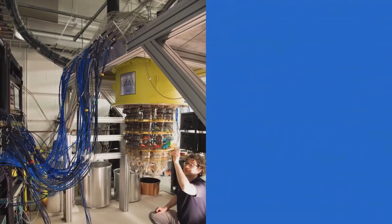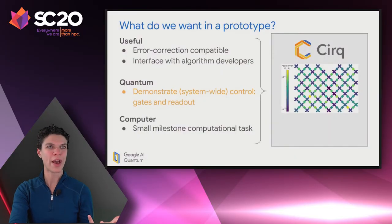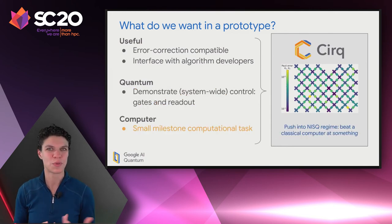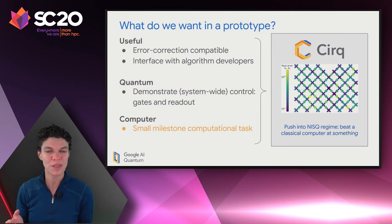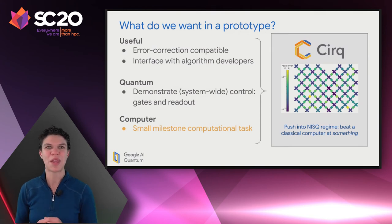We took a picture of our system — the cryostat is there with the processor inside, cables coming out from the top go to the electronics on the left where calibration happens on those control electronics. We have our quantum prototype and would like to evaluate its functionality as a computer. A computer should demonstrate a small milestone computational task. Since we've built a prototype of around 50 qubits — at the edge of the regime where no classical computer can enter — we'd like to push into that regime and beat a classical computer at something.